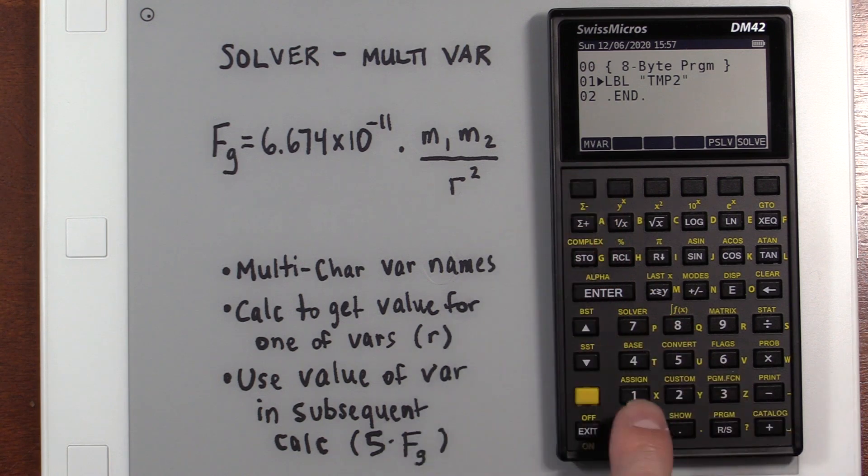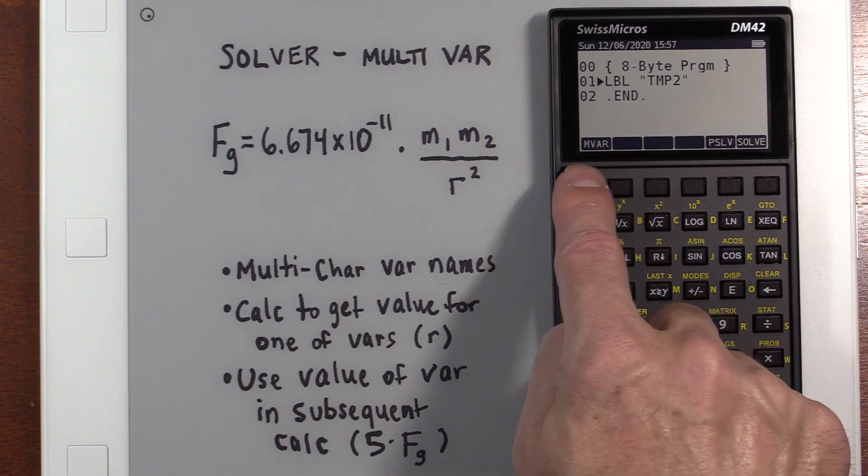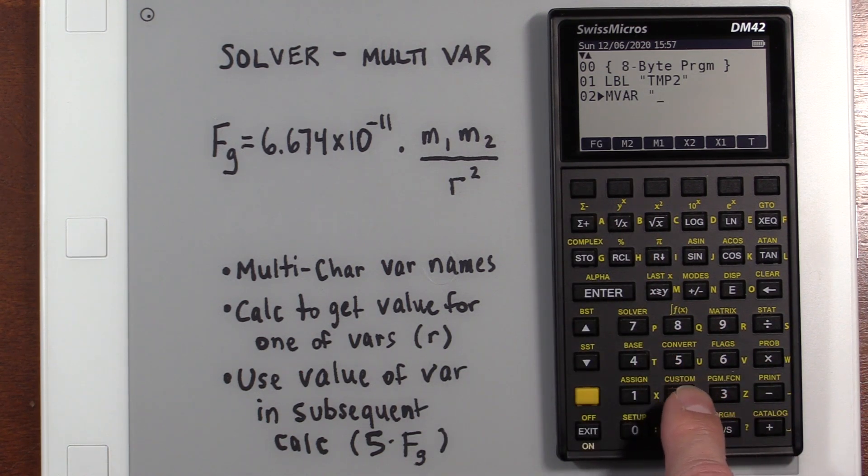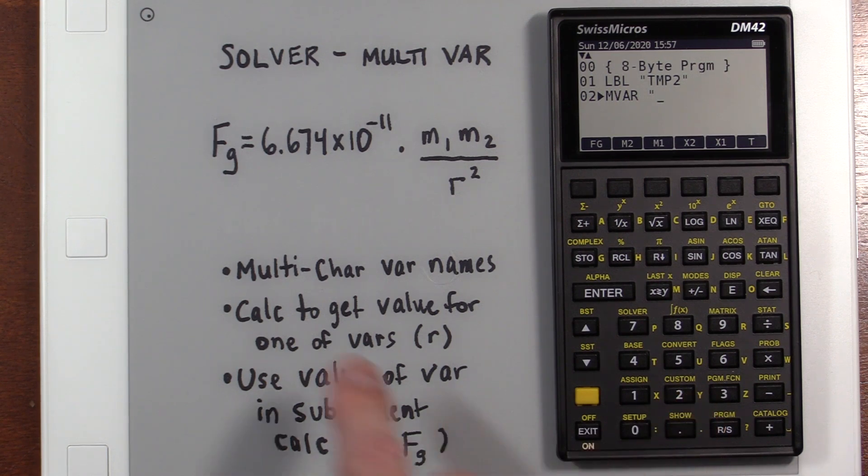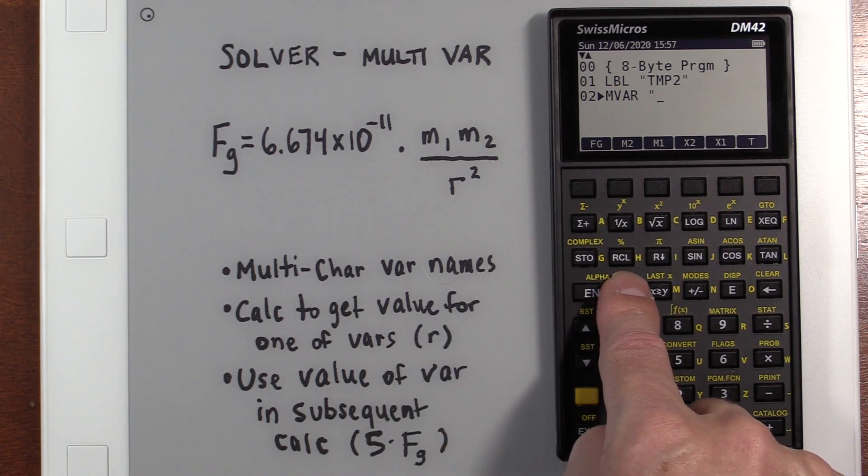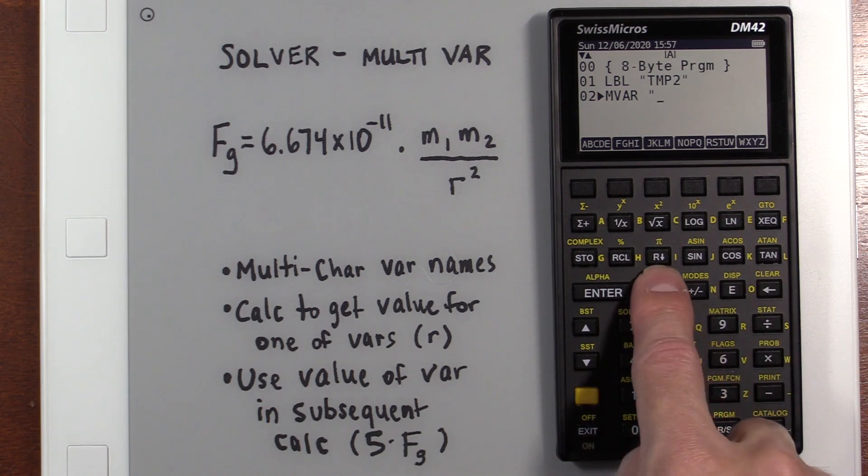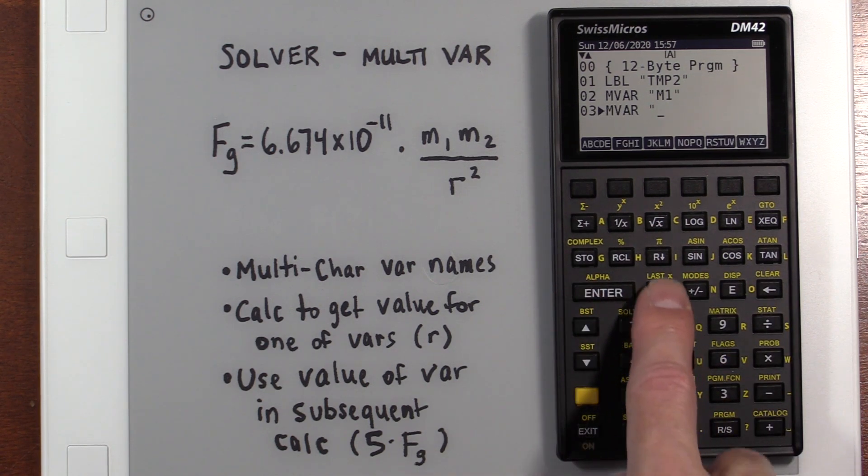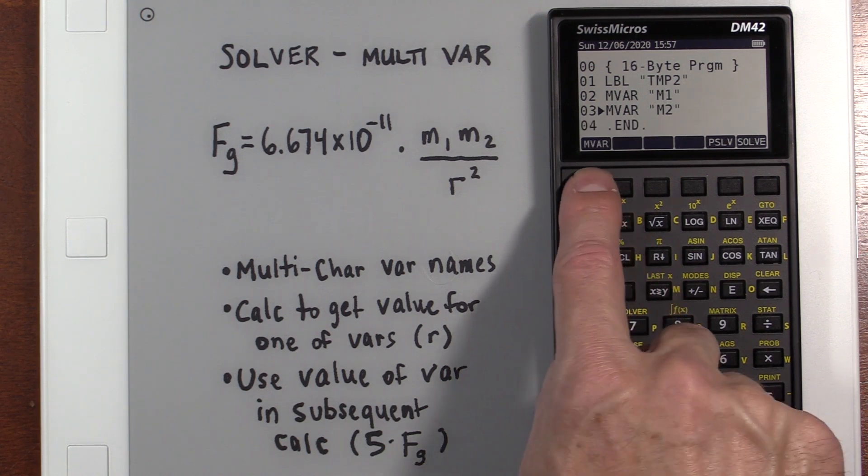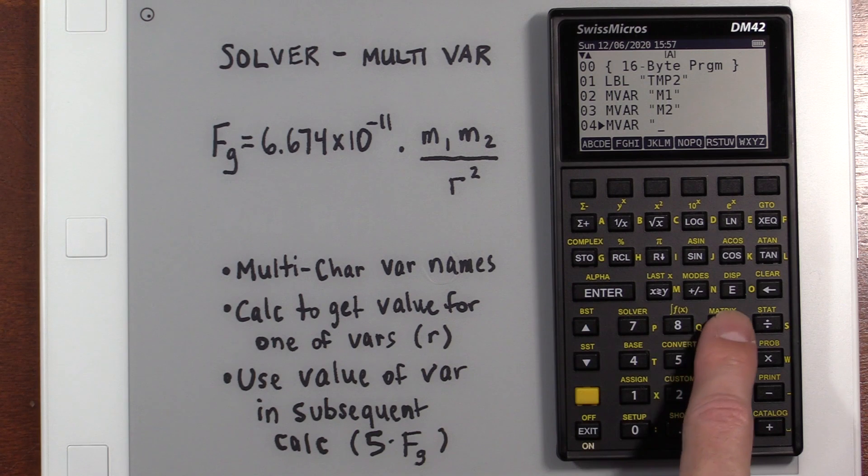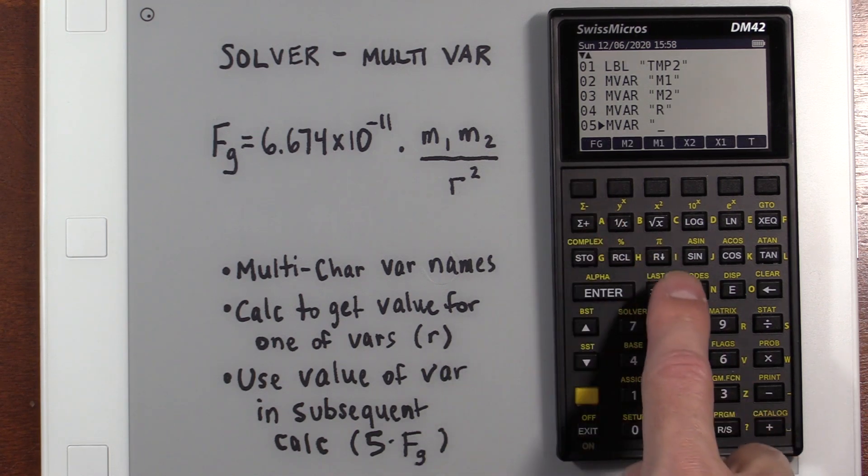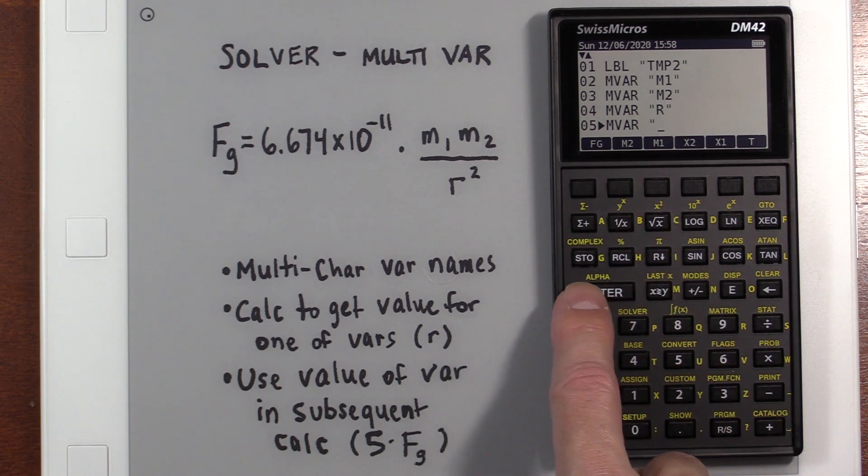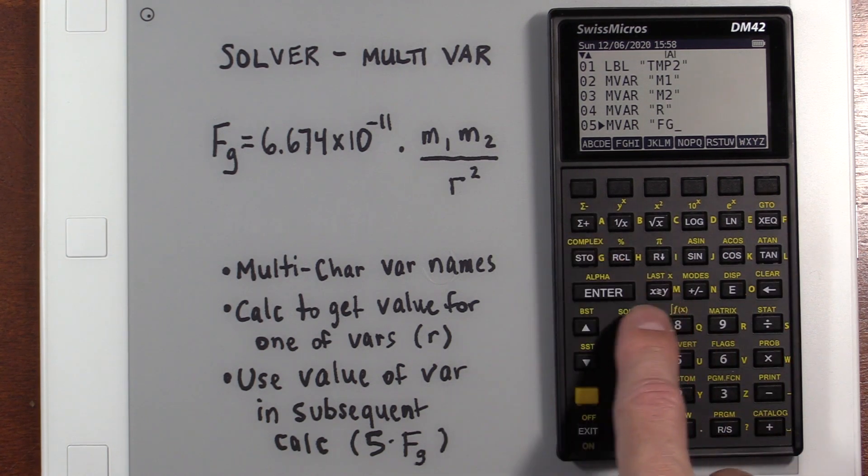And we've got to declare all our variables here. I'm using the solver menu because it's quicker to get to this MVAR. It's also available under the program functions. It's just buried a few menus down, or a few screens down. So this is quicker. So we're going to need an M1, an M2, an R, and an FG. And you can see them showing up here. It's because I practiced. But let's pretend I hadn't done that. So our first one would be M1.